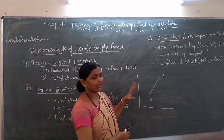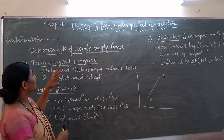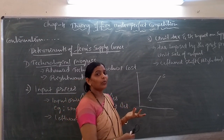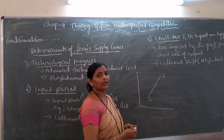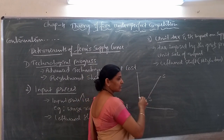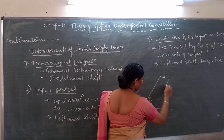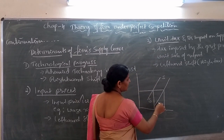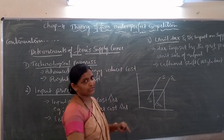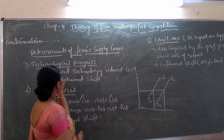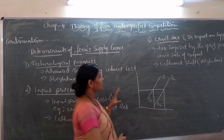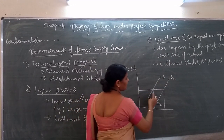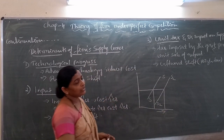Suppose price in the market remains the same. If there is any change in other determinants — for example, improved technology is used — then the firm is able to produce more units of output. Then it supplies more. So the supply curve shifts towards the right. The firm is able to sell more. S1 is the original supply. S2 is the new supply curve because of using improved or advanced technology in production. As cost decreases, the firm is able to sell more. This is a rightward shift of the supply curve.